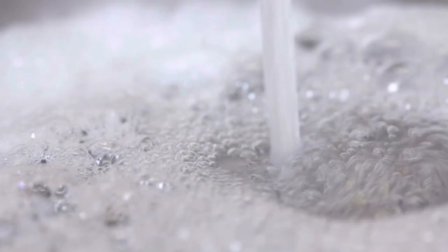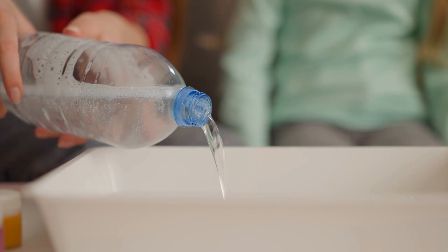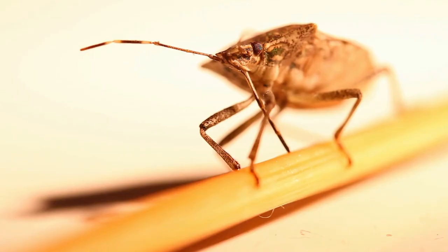Make a soapy water trap. This method is simple and effective as it suffocates the insects. Mix liquid dish soap with warm water in a container. Place the container under a light source where stink bug activity is prevalent. Stink bugs are attracted to light and they'll fly toward the light source and land on the trap.